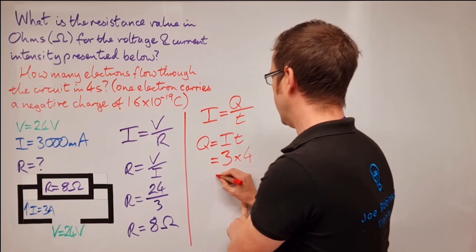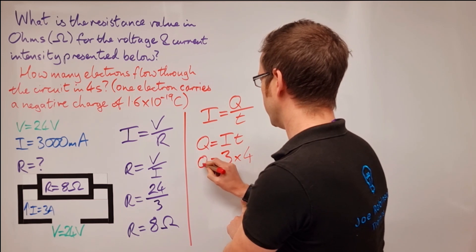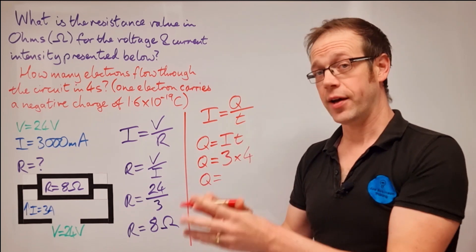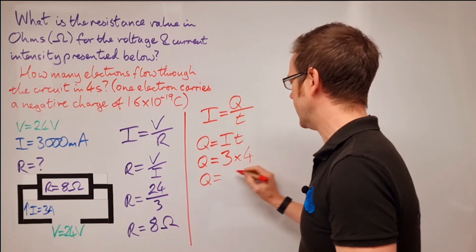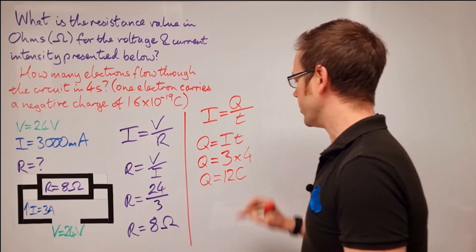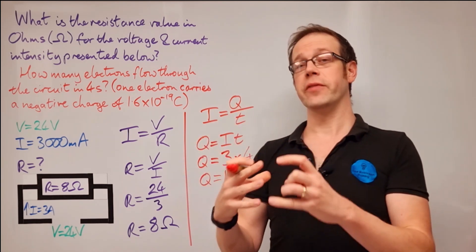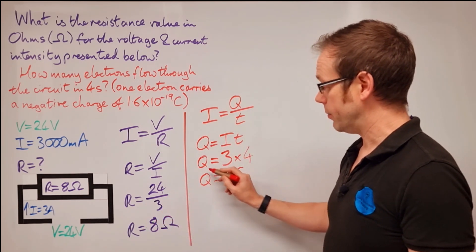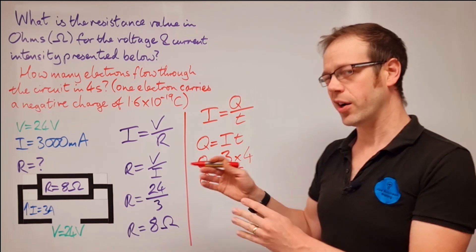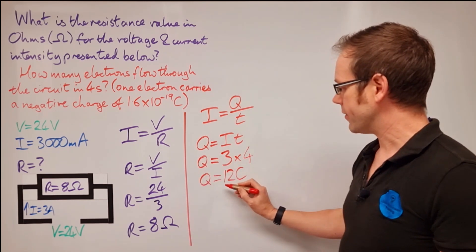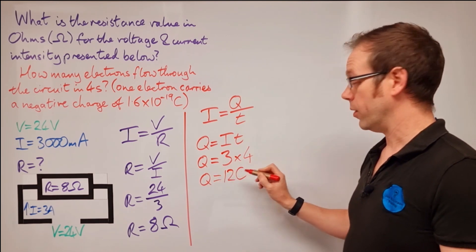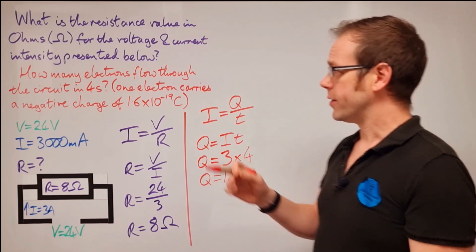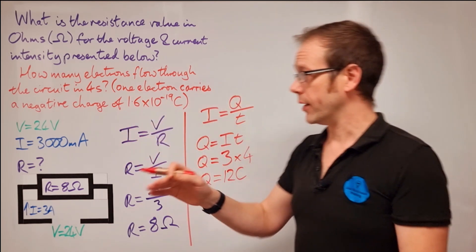So the current of three amps flows for four seconds. So we've got three times four, and that's going to give us a value of Q. So the value of Q, which represents the charge in coulombs or bunches of electrons, which is going to be 12 coulombs. Remember, a coulomb is just a big bunch of electrons that we lump together in order to make it easier to do the maths. And we give that the mathematical symbol Q for quantity de charge, I think is the way that gets defined. So the charge is 12 coulombs or 12 big bunches of electrons flow through that circuit when three amps flows for four seconds.